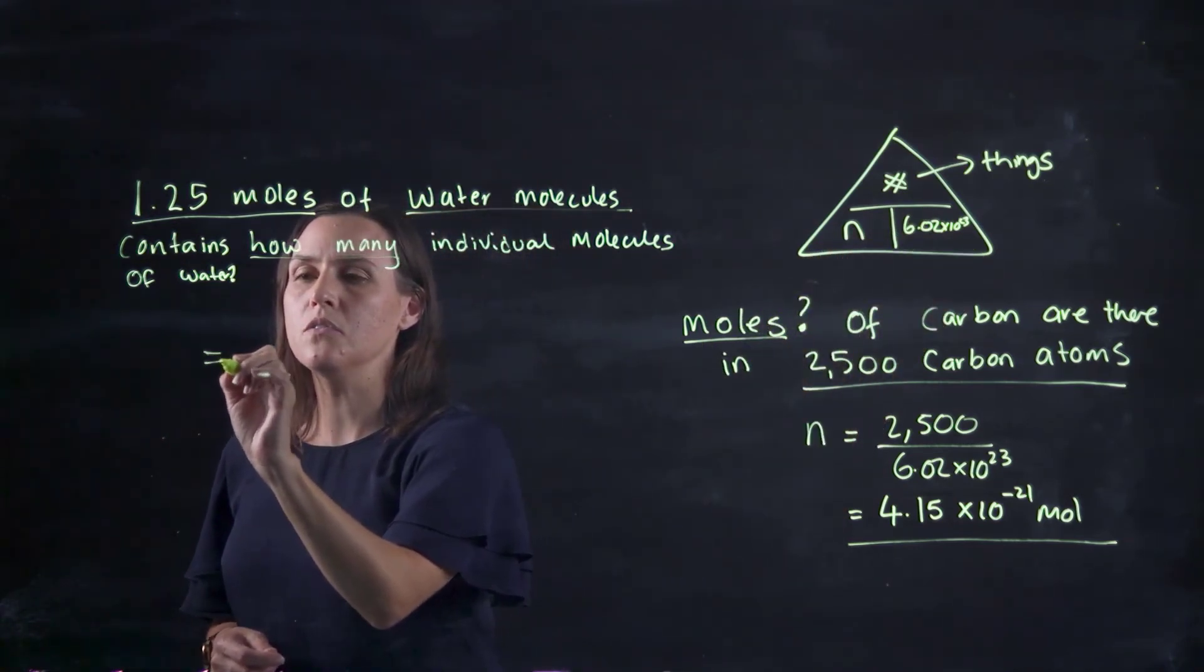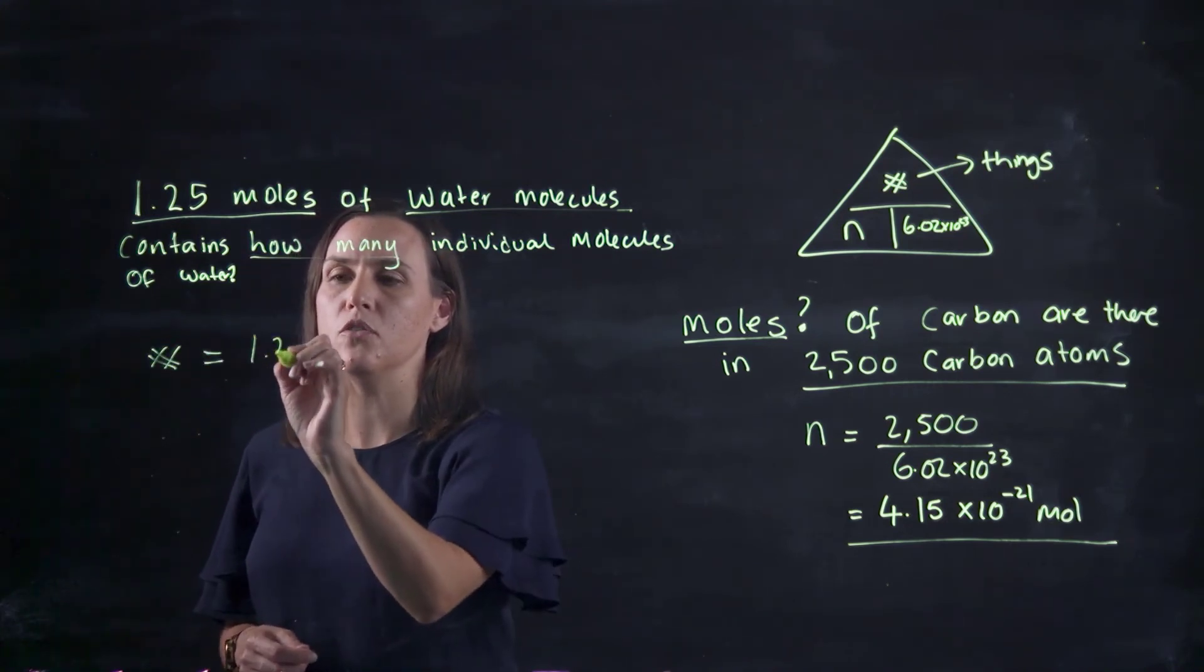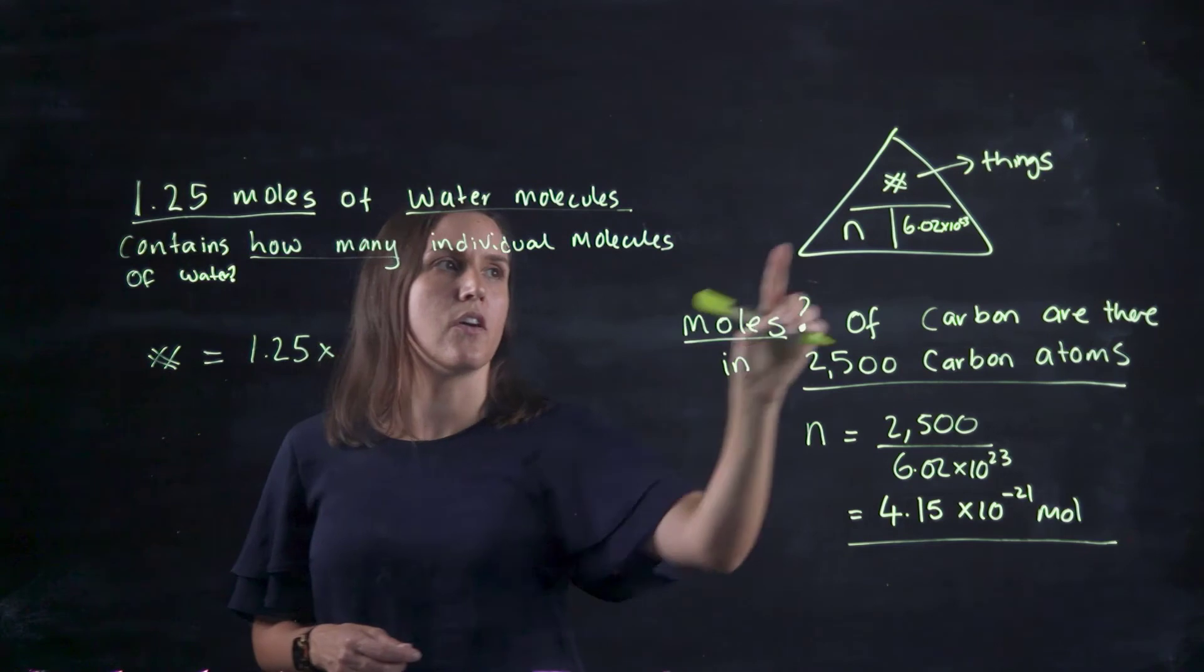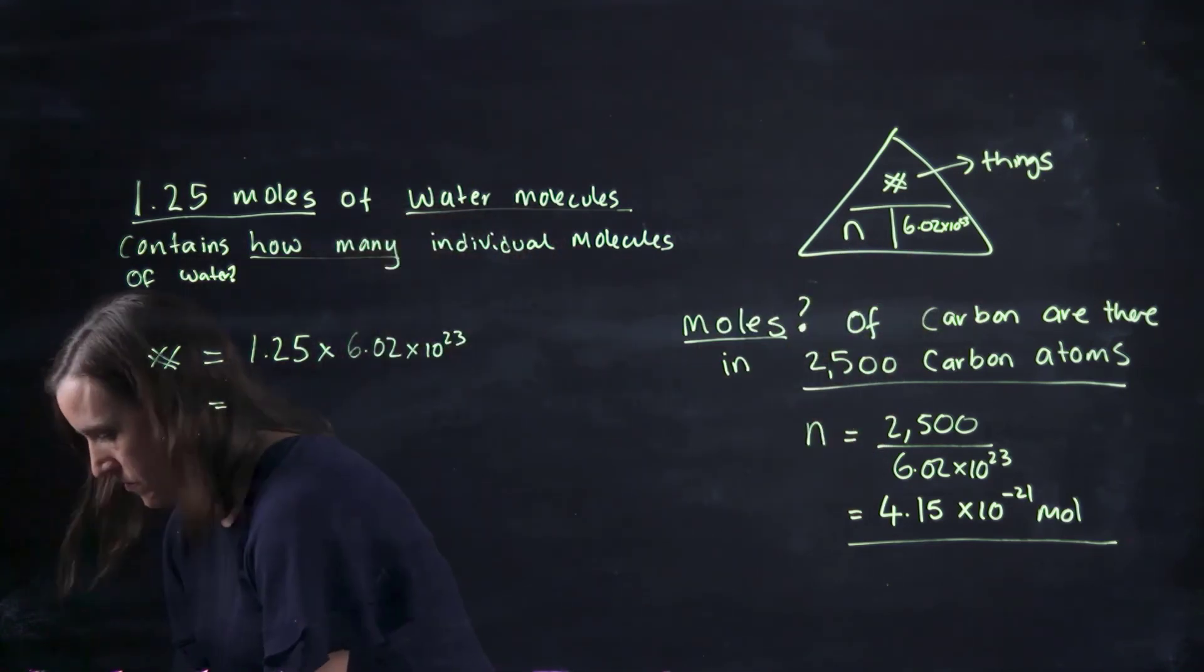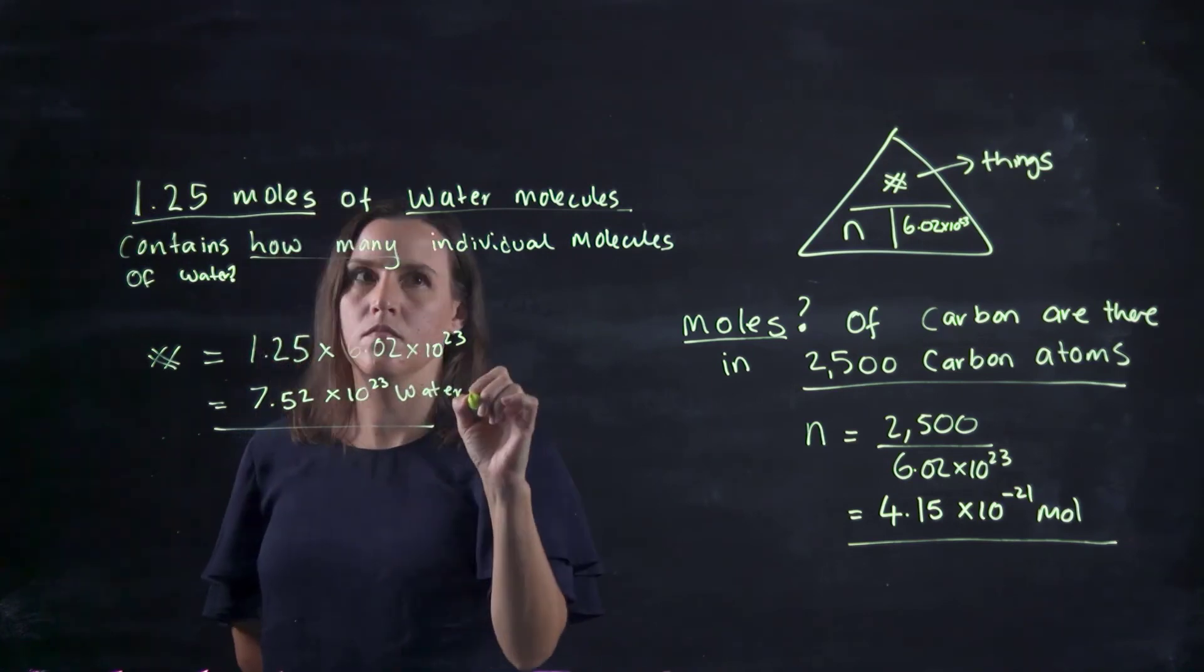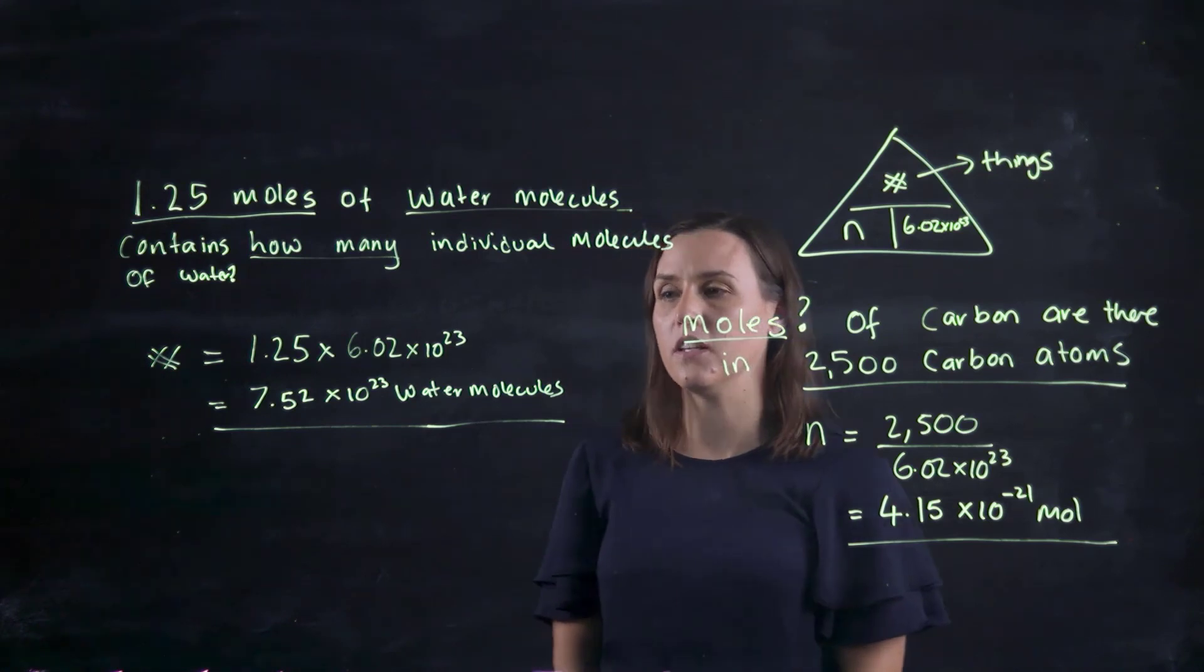So it equals our number of water molecules equals 1.25, our moles, times Avogadro's number. We would get 7.52 times 10 to the 23 water molecules.